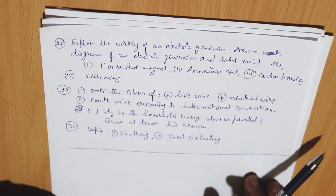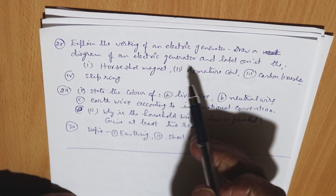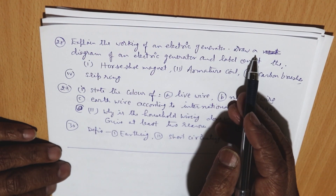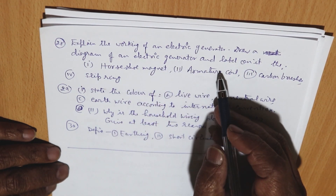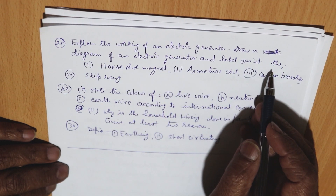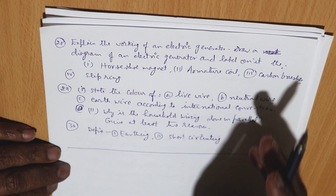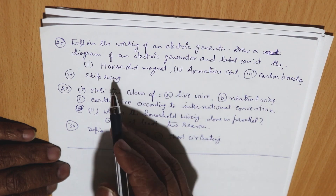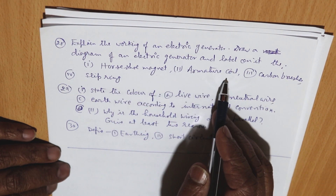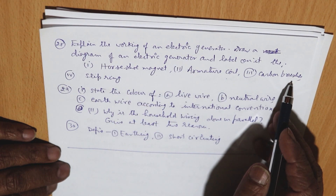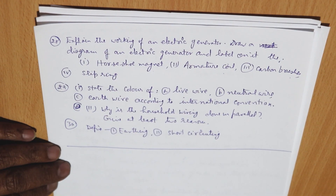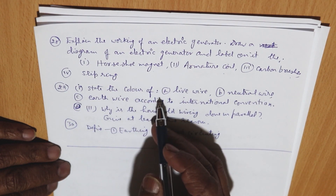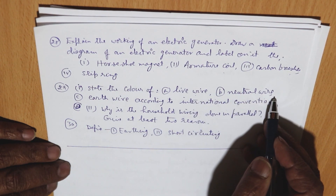Explain the working of an electric generator. Draw a diagram of an electric generator and label it — showing the horseshoe magnet, armature coil, carbon brushes, slip rings. Then, state the colour of the live wire, neutral wire, and earth wire according to international convention.